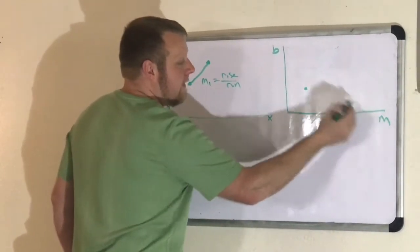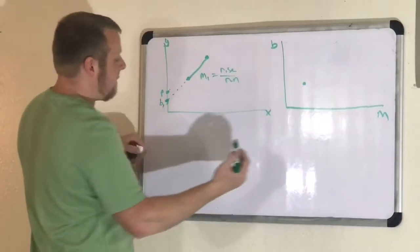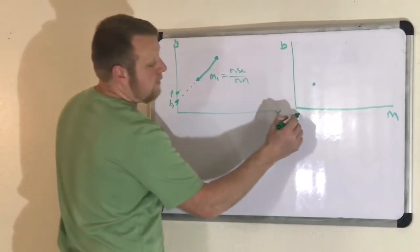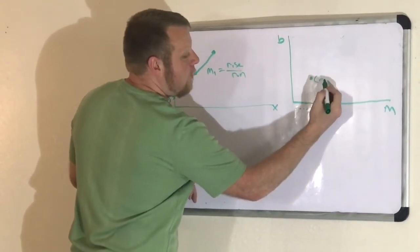So this point over here, this m and b, is going to be, well, what's the value of that m? We said it was m1. So if you go over all the way over to m1, that's our point, m1.